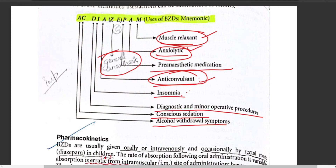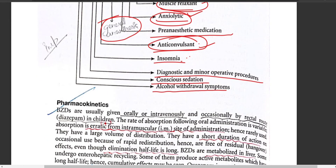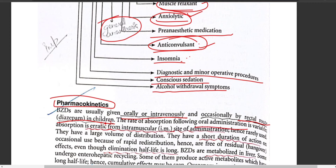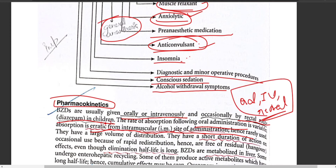Regarding pharmacokinetics, benzodiazepines are usually given orally or intravenously, and occasionally rectally — particularly for children. The rate of oral absorption is variable. They are not generally given intramuscularly because absorption via IM route is very slow. For children, rectal administration of diazepam tablets is commonly used.